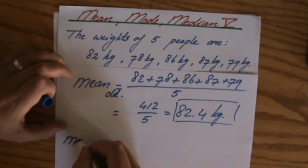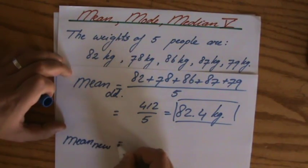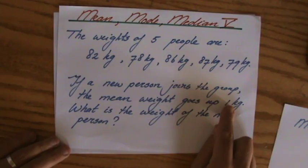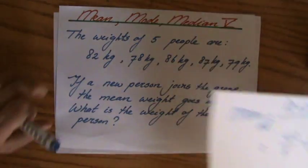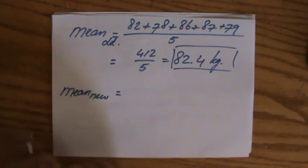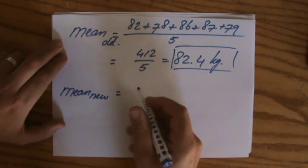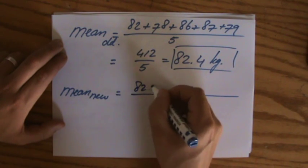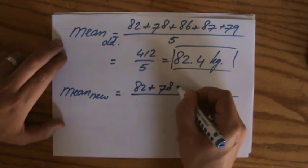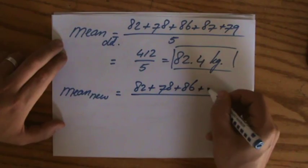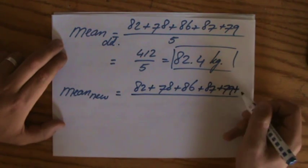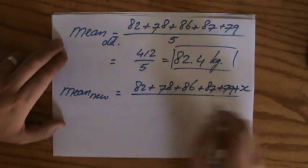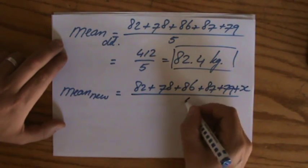Mean new. Because what is happening? The mean is going up with one kilogram. That's interesting. Because the mean is the sum of all the values divided by the amount of values. Now what is the sum of all the values in the new situation? Well that is 82 plus 78 plus 86 plus 87 plus 79 plus what? Can I call that x? The weight of that new person. Divided by how many people do I have? 6.